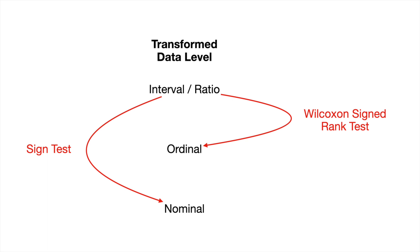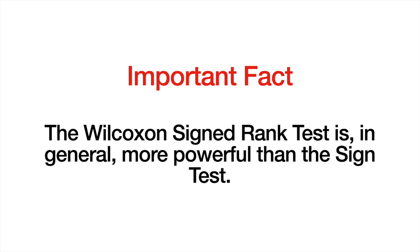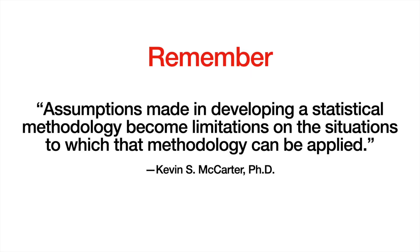On the other hand, the Wilcoxon signed rank test transforms the data from the interval or ratio level to a lower level, but this time to the ordinal level rather than the nominal level. The ordinal level is one data level higher than the nominal level, so there is a loss of information, but not as much. Because we're not losing as much information, the data is more informative about what's going on in the population, and that is why the Wilcoxon signed rank test is more powerful than the sign test when it's applicable.